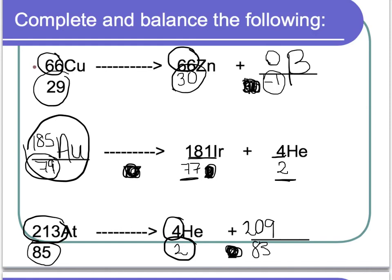And again, the way we figure out what element this is, is we look at the atomic number. So if you look on your periodic table, the element with the atomic number of 83 is going to be bismuth, which is Bi.